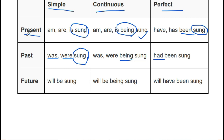'I write a letter' → 'A letter is written by me.' 'I am writing a letter' → 'A letter is being written by me.' 'I have written a letter' → 'A letter has been written by me.' 'I wrote a letter' → 'A letter was written by me.' 'I was writing a letter' → 'A letter was being written by me.' 'I had written a letter' → 'A letter had been written by me.'